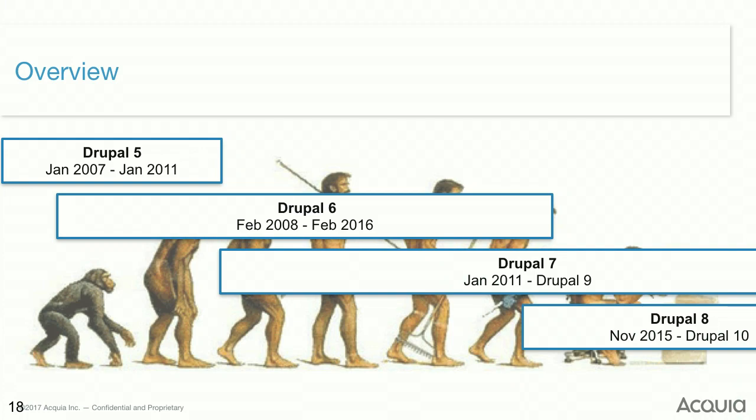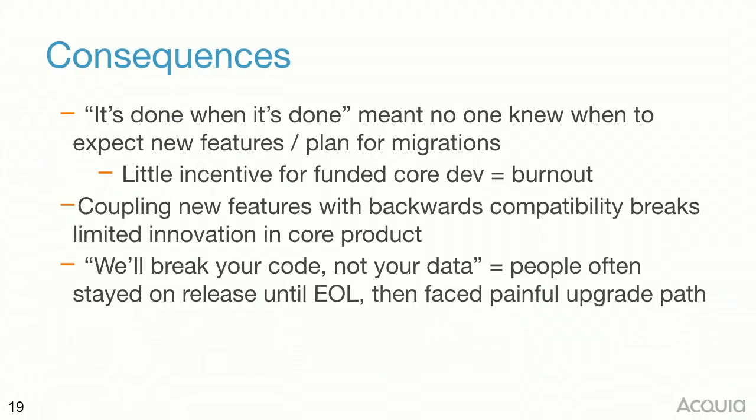In Drupal 7 we decided to do a lot more ambitious things — multilingual, the D7 UX initiative modernizing the admin interface, a new database abstraction layer, automated tests. As a result the development cycle went from about a year to more like three years, so everyone on Drupal 6 had to wait until Drupal 7 came out to get new core features. In Drupal 8 we got even more ambitious — views in core, web services, rewriting the theming system with Twig — that took even longer, closer to a four-and-a-half-year development cycle. People on Drupal 7 were stuck on whatever version of jQuery shipped in January 2011.